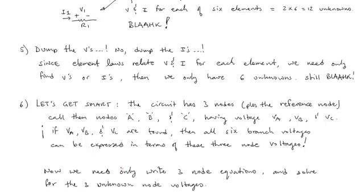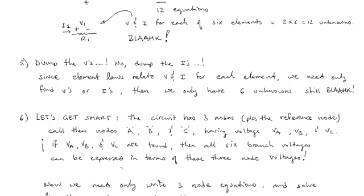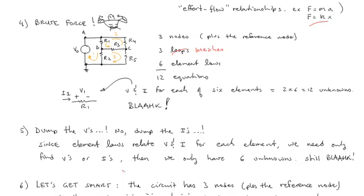If VA, VB, and VC are found, and this is my claim, if we find VA, VB, and VC, then all six branch voltages can be expressed in terms of these three node voltages. So let's look at that. Let's think about R1. Now, I haven't shown the polarity of R1 for voltage of R1. Let's just say this was VR1. Well, VR1 can be expressed, can it not, in terms of the node voltages. It's going to be the voltage at node B, because that's node B is the node to which R1 is connected down in its positive terminal, minus VA. So if I know VA and VB, I can very easily write VR1. And the case can be made for all of these.